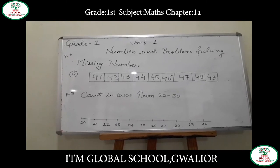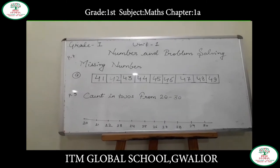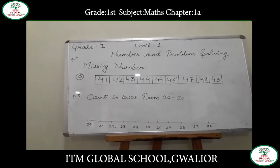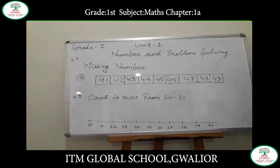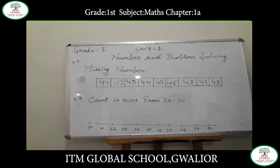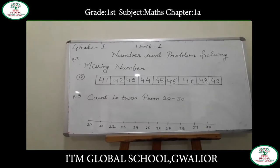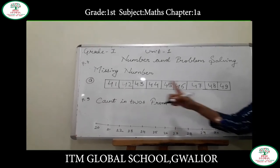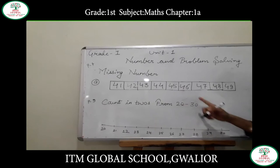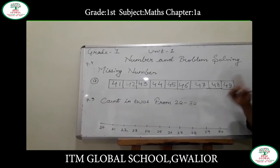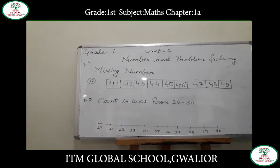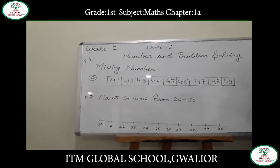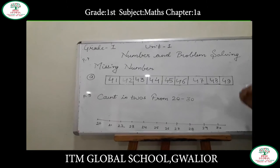Now come to page number 9. On page number 9, the question is: you have to count in twos from 20 to 30.